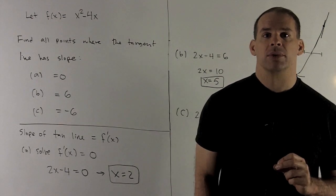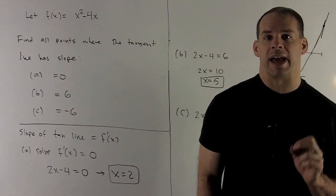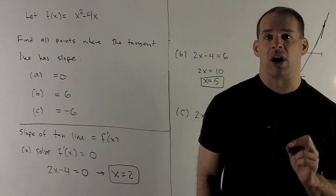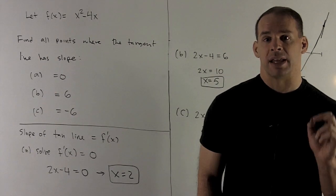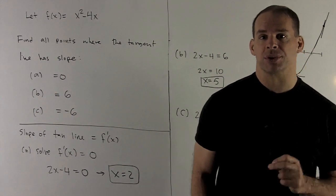For the first case, 2x - 4 = 0, we solve that and get x = 2. That's going to be our answer. So when the slope is 0, or when we have a horizontal tangent line, that's going to happen at the point x = 2.